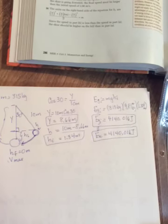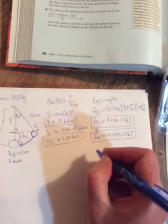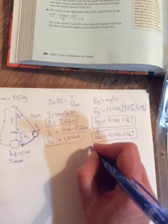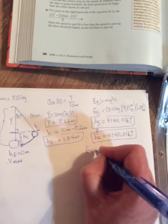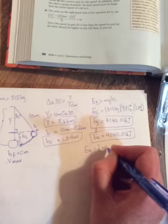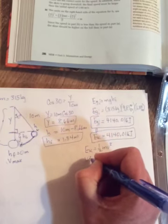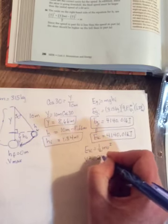So then it says, what will be the speed of the wrecking ball at that point? So you could do this two ways. You could say, kinetic energy is equal to one-half mv squared. So v squared is just going to be equal to two times the kinetic energy divided by m.